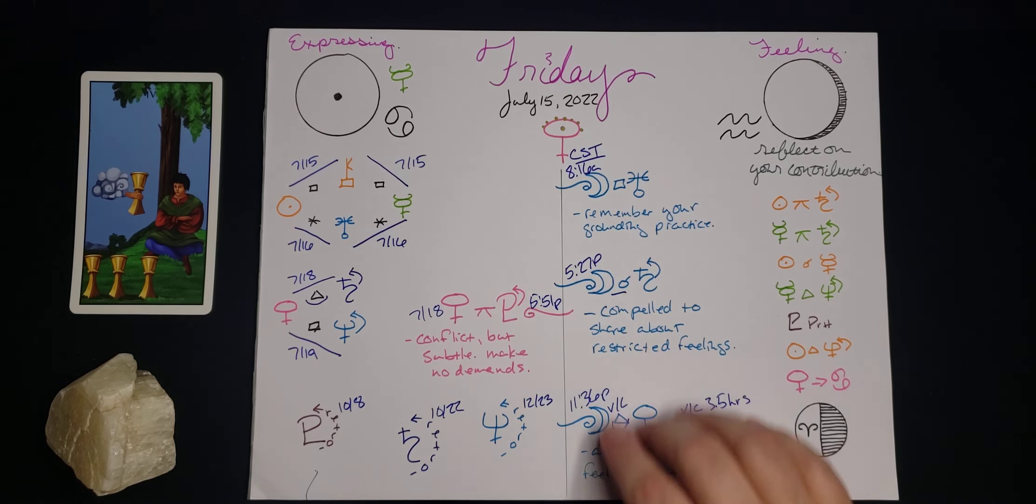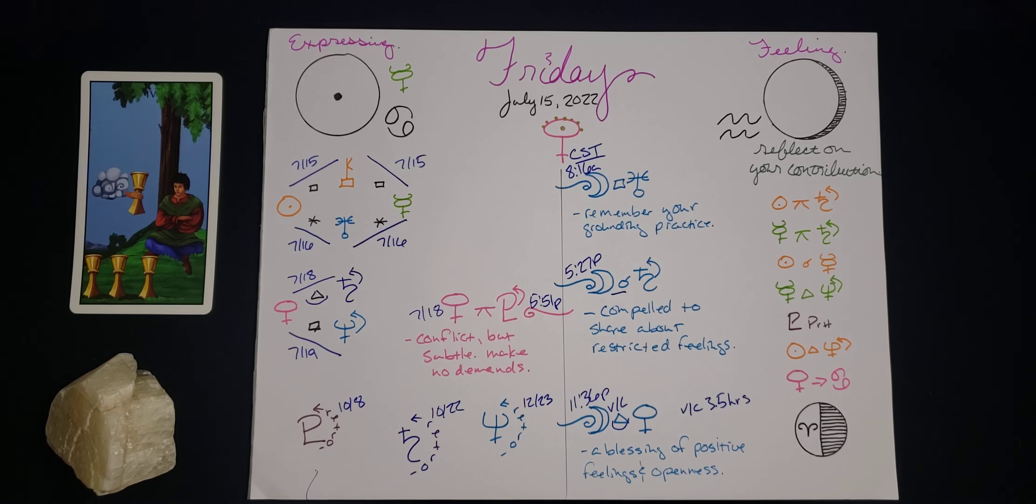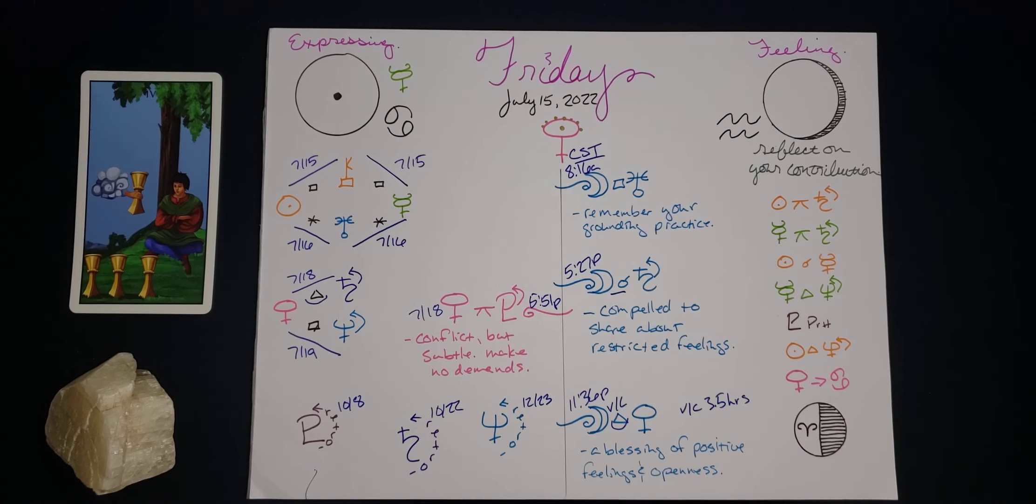On the moon's side of the page today, we have a few aspects. Moon goes square to Uranus this morning. And this can be a really sort of jumpy vibe, a little bit excitable, but not necessarily in a fun way. A little kind of nervous energy that can get us bouncing around or making impulsive changes that may not come across well. So, remember your grounding practice, remember to breathe, remember what it's like to be in your body and go forward at a predictable pace. I would say stick with the plan this morning.